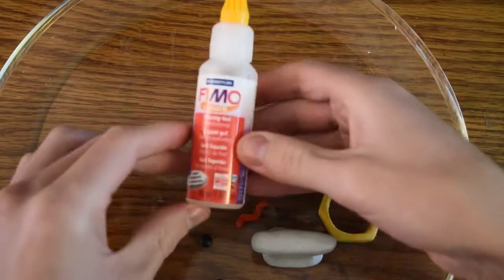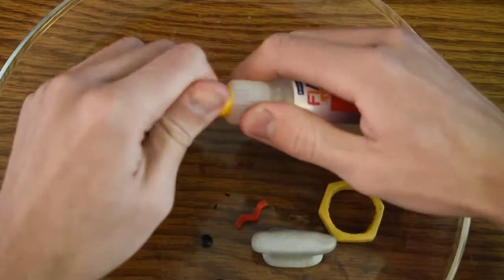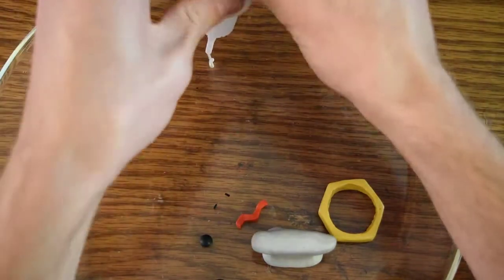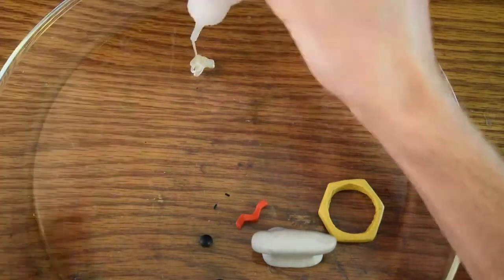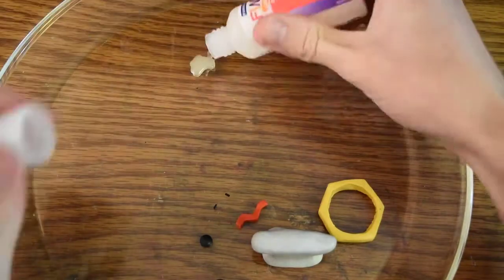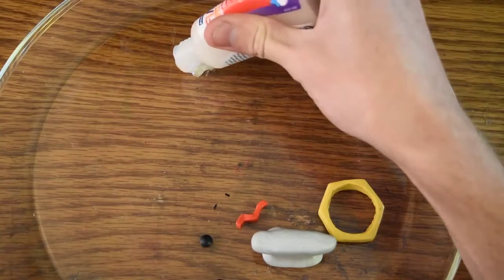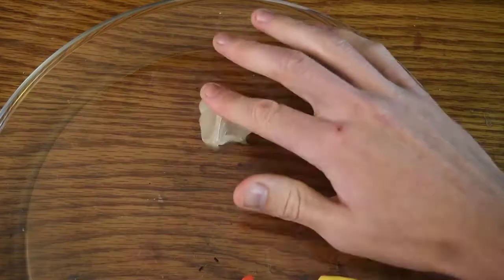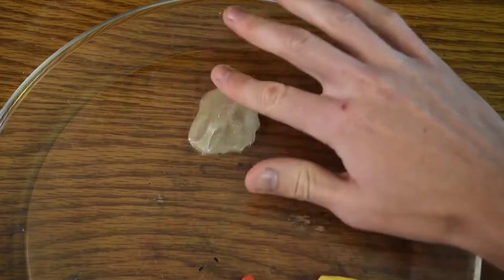Here's the Fimo liquid clay I was talking about. This will hopefully work pretty well for creating the eye. Let's just pour a bunch of it onto the tray and make it a little thinner. Now Meltan is ready to get baked.